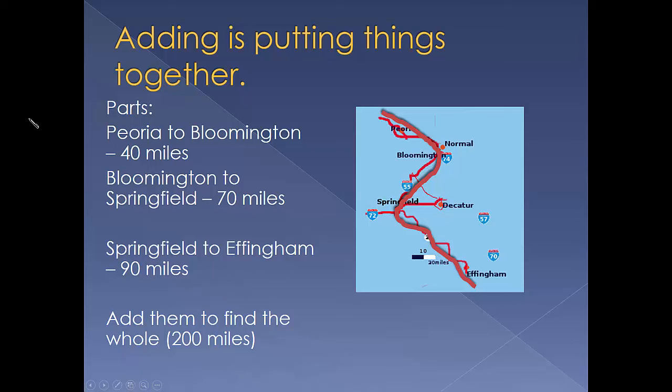Let's take a road trip. Adding is putting things together. The first part of this trip Peoria to Bloomington 40 miles. Second part Bloomington to Springfield 70 miles. Third part Springfield to Effingham 90 miles.